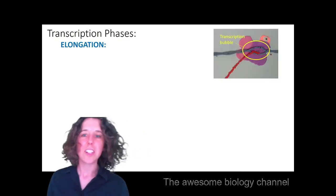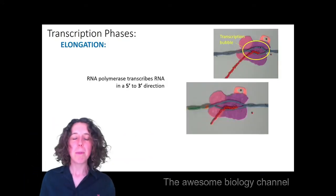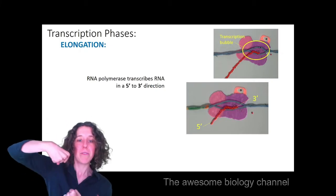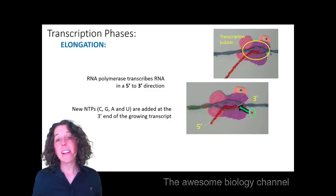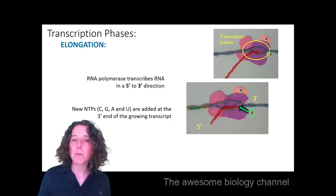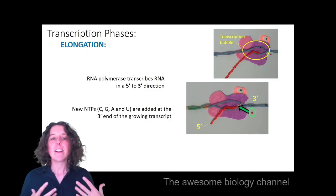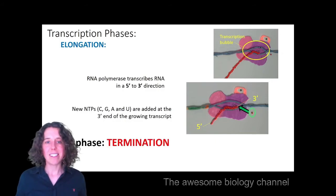So in elongation, we had that transcription bubble being made, that little local region of denatured DNA, and our new NTPs, or our new bases, were always added at the 3' end of that growing RNA strand.